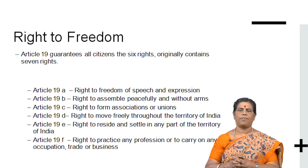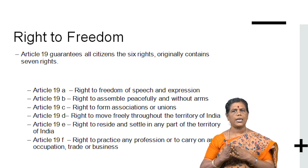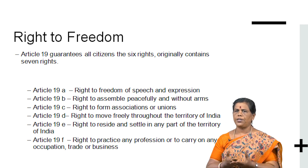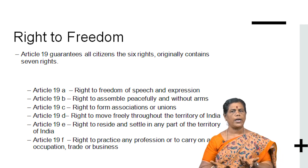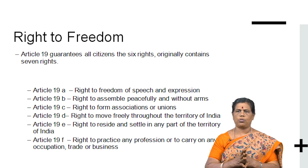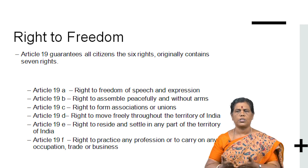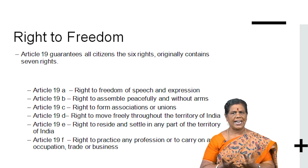Article 19A guarantees the right to freedom of speech and expression — we have the right to speak and express our views. Article 19B is the right to assemble peacefully and without arms. We have the right to assemble peacefully at any association — the right to demonstrate our views, but not while bearing arms.